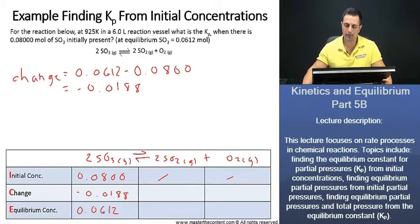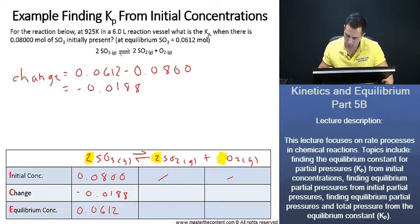Now, to write down the change for our products, we have to take note of one thing. We initially have two moles of sulfur trioxide, here we have two moles of sulfur dioxide, and we have a mole of oxygen. So the change for two moles of sulfur trioxide to two moles of sulfur dioxide is going to be exactly the same. We can write down 0.0188.